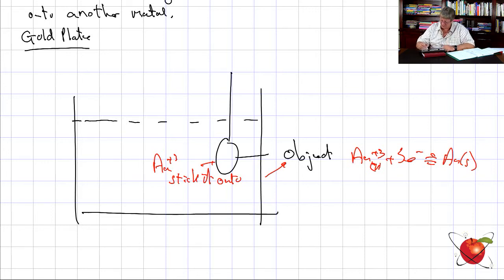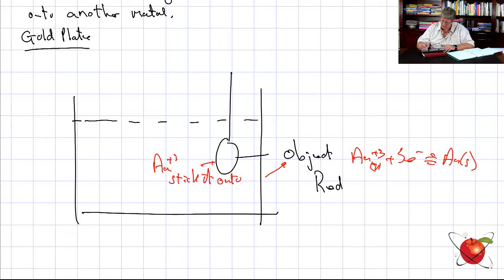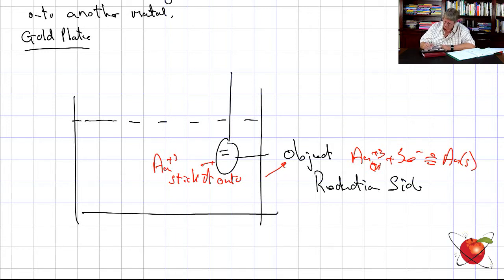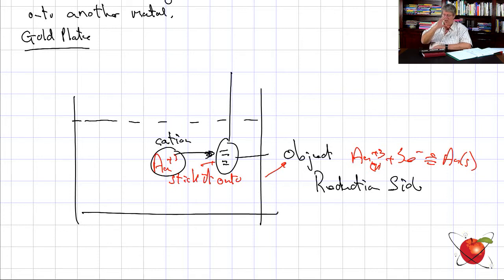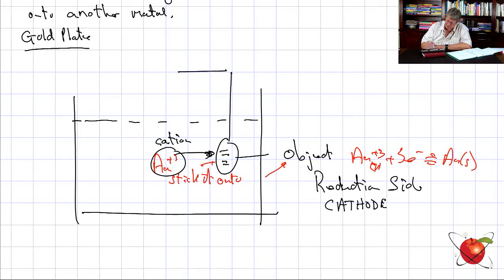Here's my pot with the liquid. We are gaining electrons — therefore this is reduction. The negative side will attract the positive Au3+ cation. Remember: cation — a negative ion attracts the cation. So this is the reduction side, which means it's the cathode.